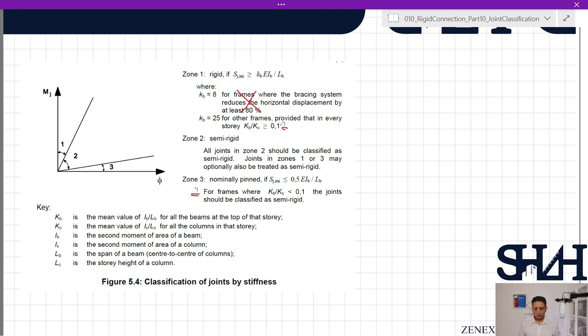For frames where Kb divided by Kc is less than 0.1, the joints should be classified as semi-rigid. Kb is the mean value of Ib divided by Lb for all the beams at the top of that story, so Ib is the moment of inertia and Lb is the length of the beam. Kc is the mean value of Ic divided by Lc for all the columns in that story. As far as we have same beams, the mean value will be the same. We have same columns, so if we calculate Ic divided by Lc for one single column, then we have the same value as mean value.